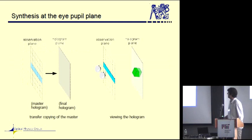For which we use this method, which we call synthesis of the eye pupil plane. This image you have already seen. Just to repeat, we create a master hologram which is divided into these viewing zones. Then we transfer it into the final hologram, and when the viewer observes it, he actually has these viewing zones in his eyes.